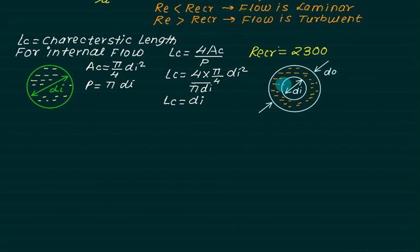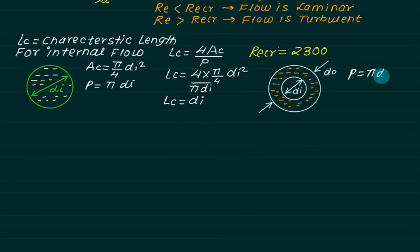Now consider an annulus formed between two pipes: the inner pipe has radius di and the outer pipe has radius do, with fluid flowing through this annular section. The wetted perimeter of the inner surface is pi times di and the wetted perimeter of the outer surface is pi times do.